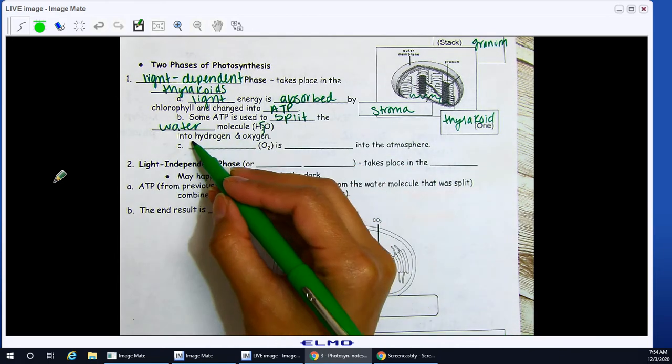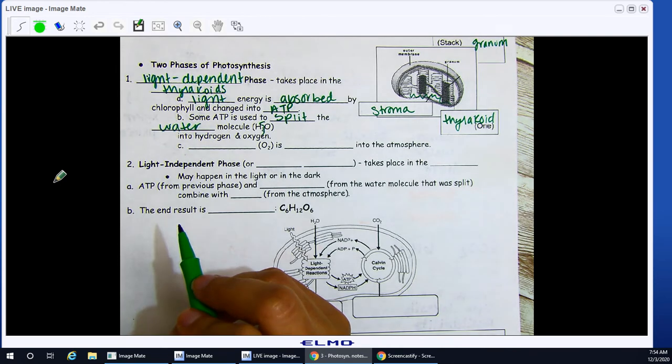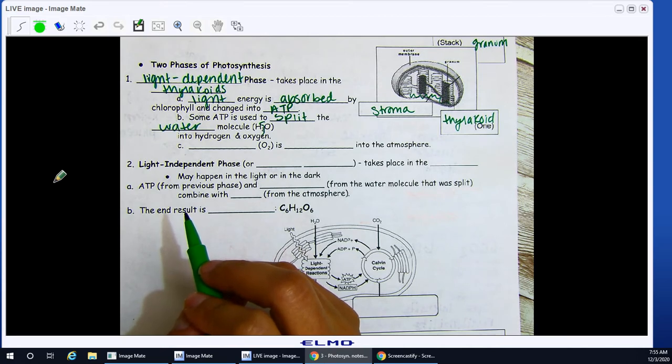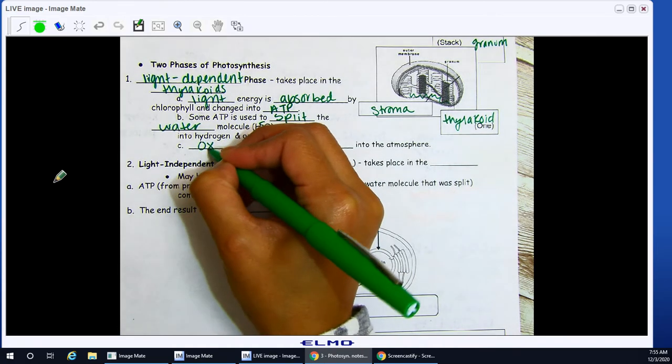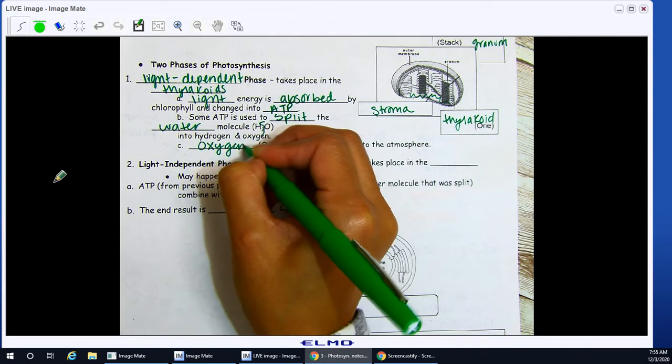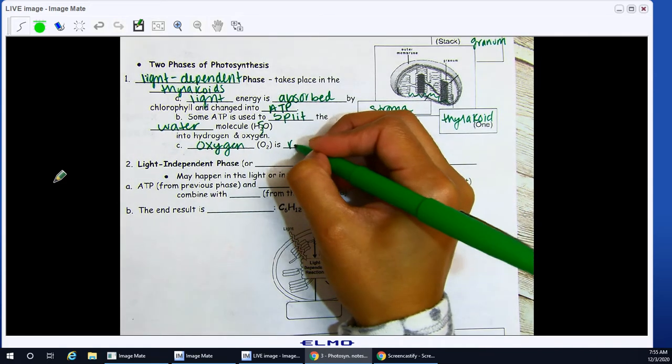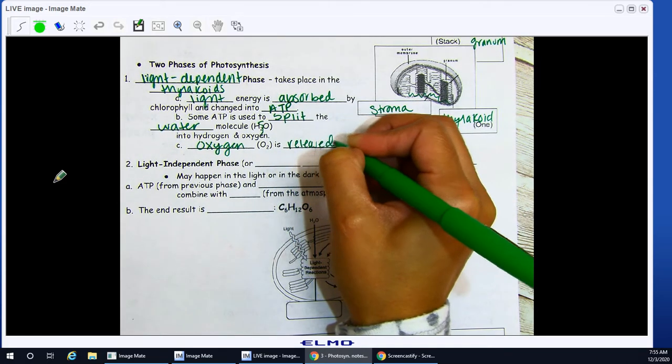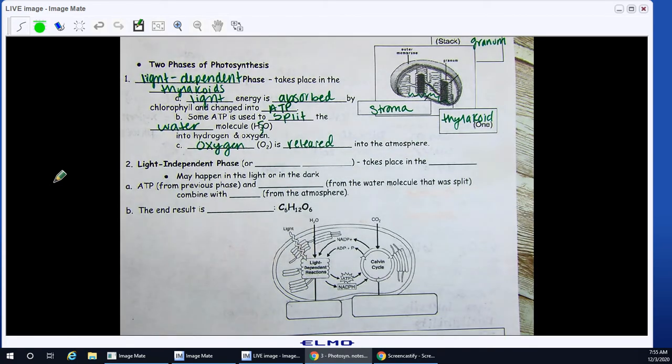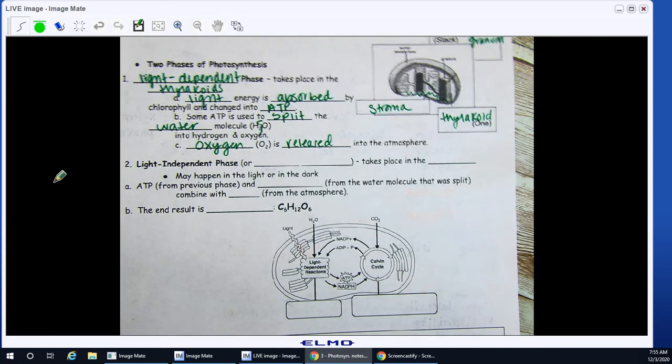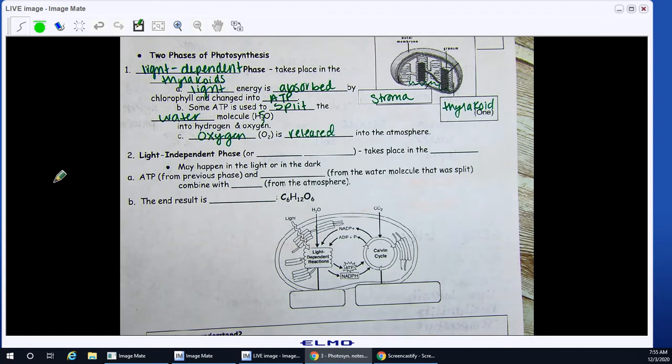So, once I break it, I'm going to break it down into hydrogen and oxygen. I'm going to split it. So, I'm breaking those bonds, and that's going to take some energy. Oxygen, that's a gas, O2, is going to be released into the atmosphere.